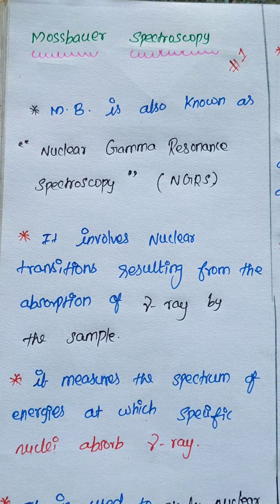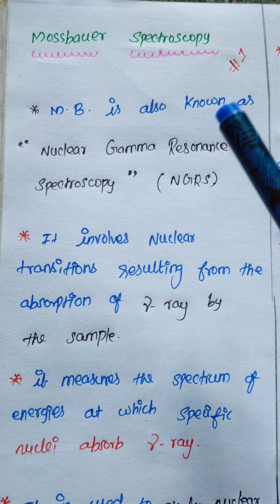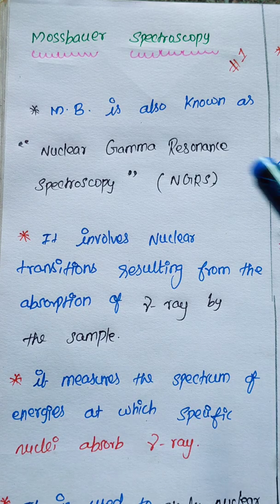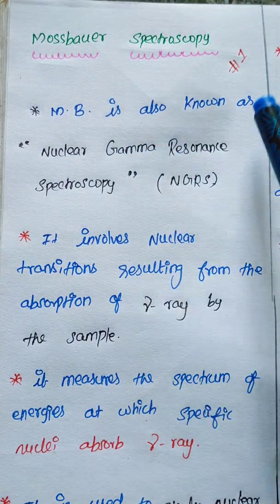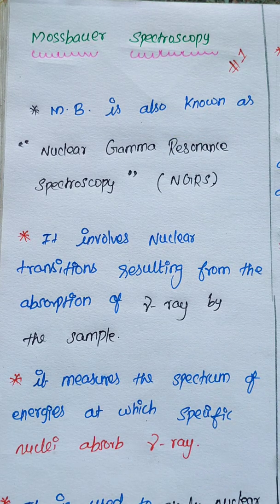In this class we will discuss Mössbauer spectroscopy — what is the principle for Mössbauer spectroscopy and other applications. Mössbauer spectroscopy is also known as nuclear gamma resonance spectroscopy. Nuclear gamma resonance spectroscopy is another name for Mössbauer spectroscopy.